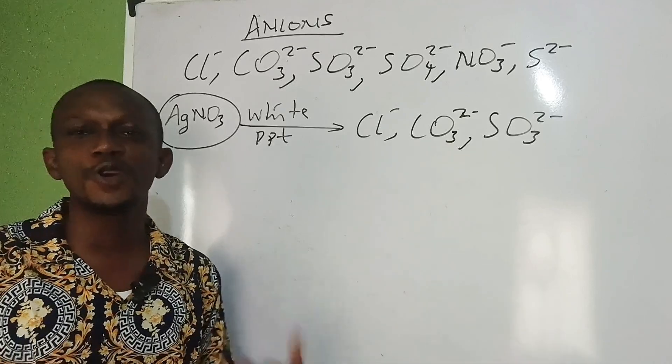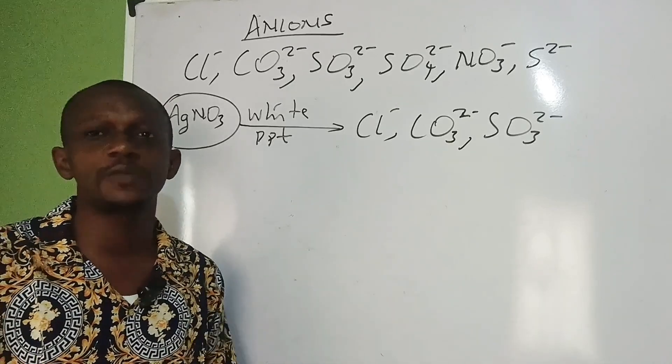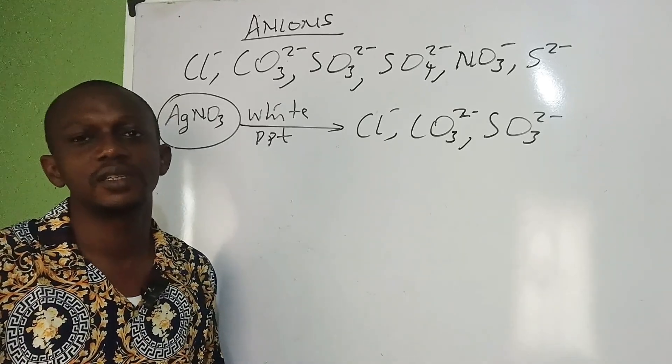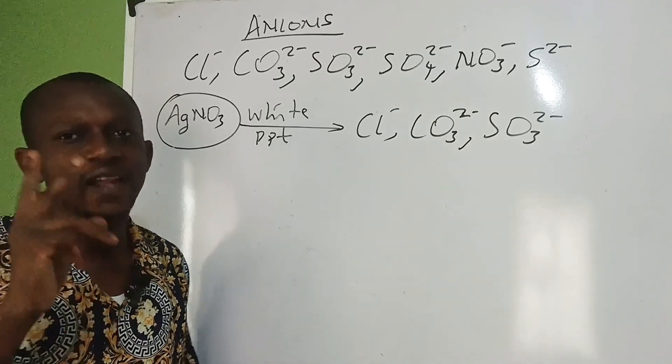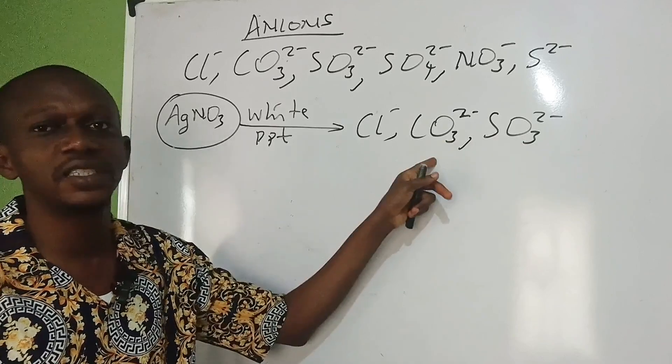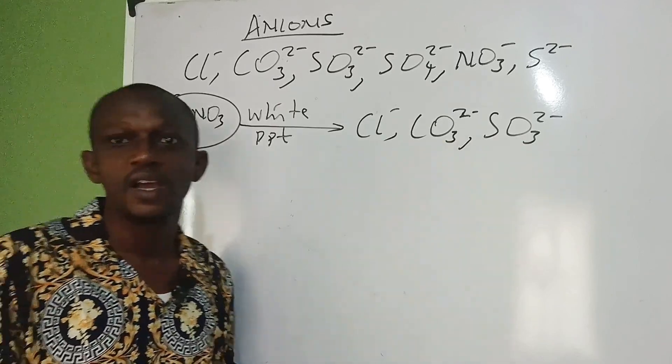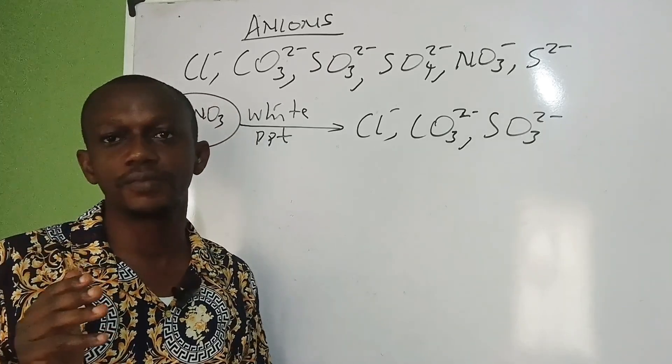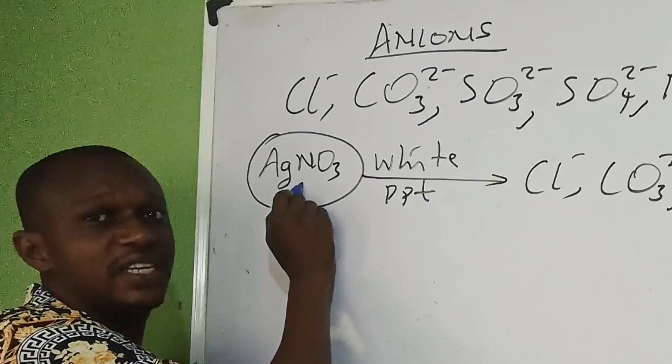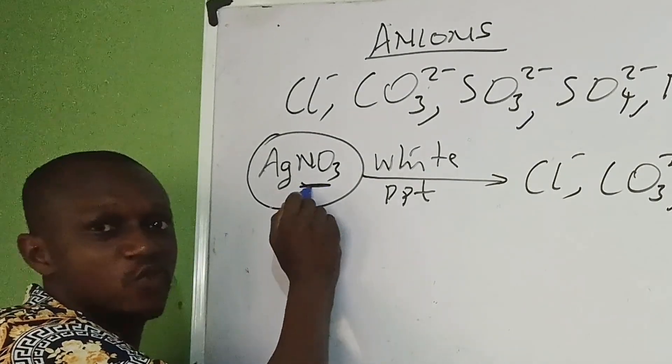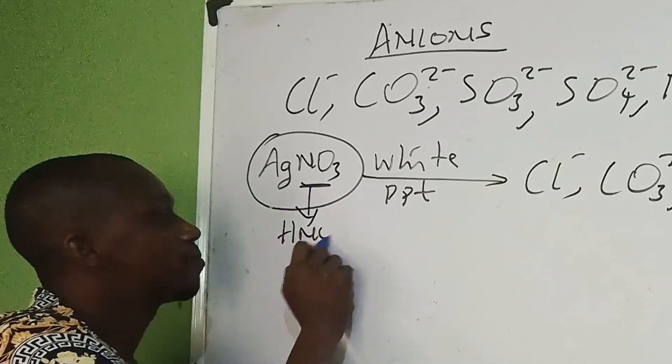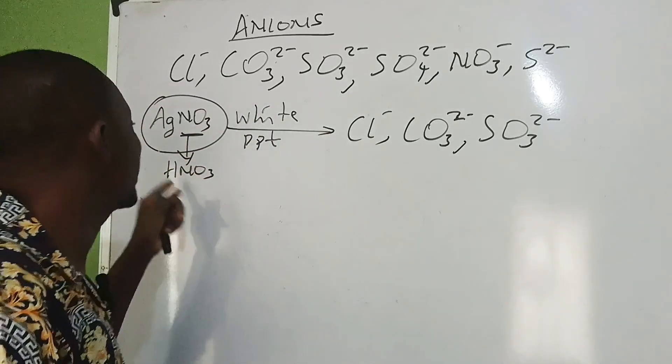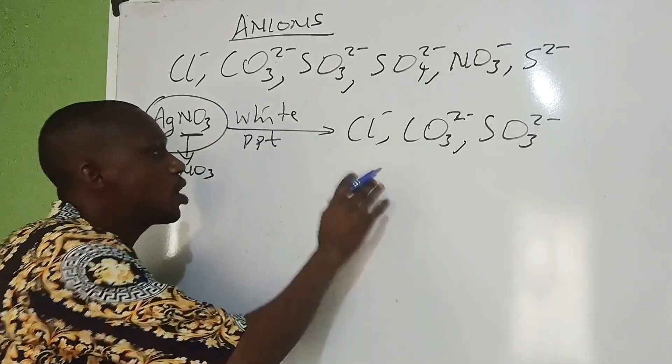Now when you get this, how do you now know which is present? Because any of the three will give us white precipitate. CO₃²⁻ and SO₃²⁻ are soluble in mineral acid, be it HCl or HNO₃. But when we use AgNO₃, we must use HNO₃ so that the NO₃ and NO₃ will be in correlation. What you have to do is that once you get your white precipitate, the next thing you will introduce is HNO₃.